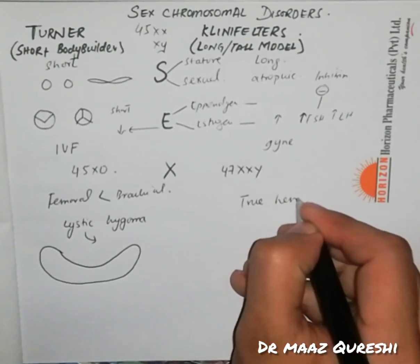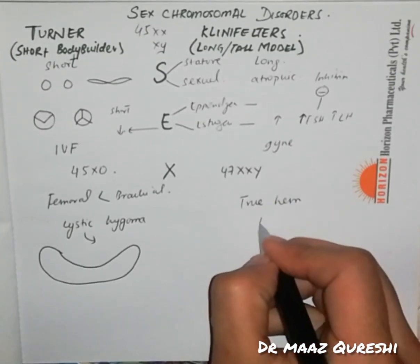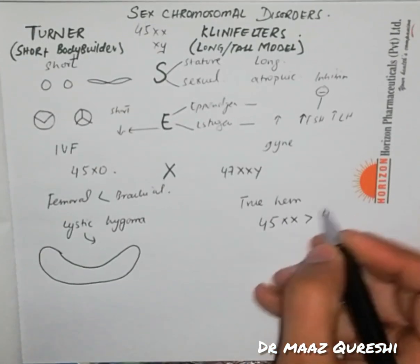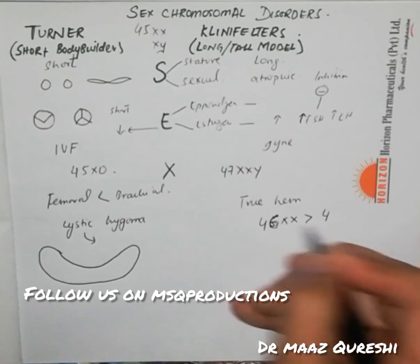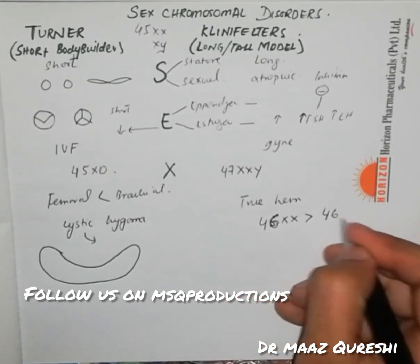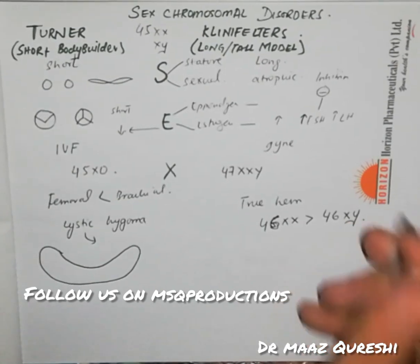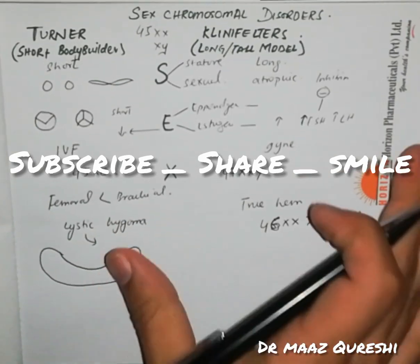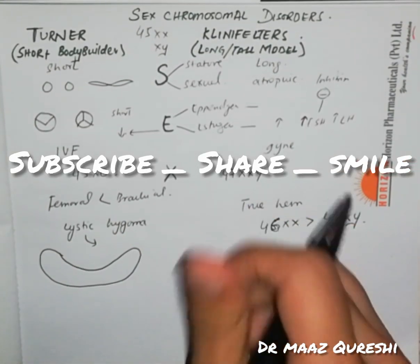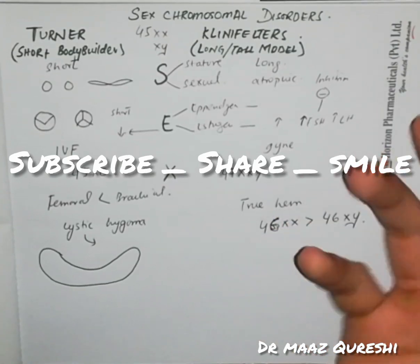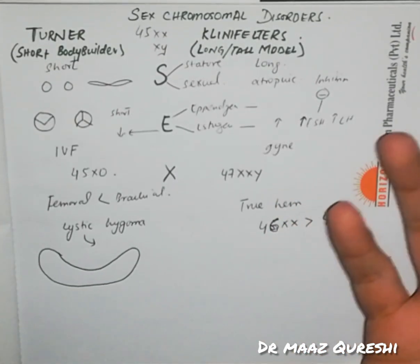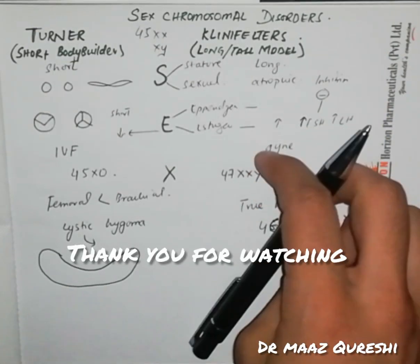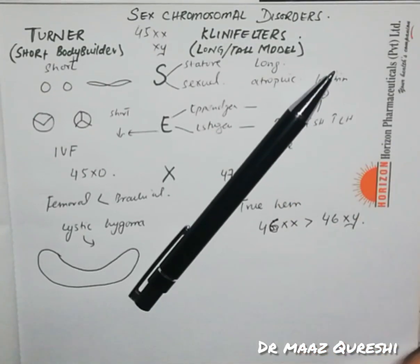An important MCQ: for true hermaphrodites, always select 46XX or 46XY — note that 45 is abnormal; normal is 46. Thank you for watching. If you liked the video, please subscribe, and if you haven't followed me on YouTube or Instagram, please do follow — that would really help. Until next time, get it, got it, good!